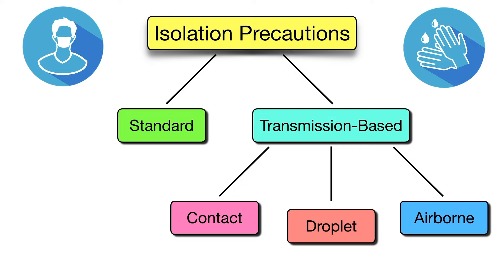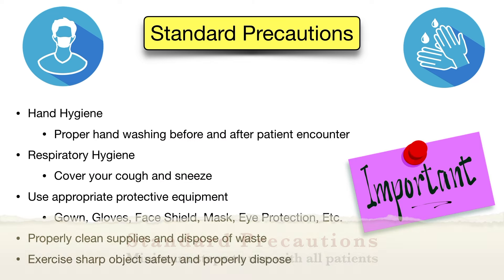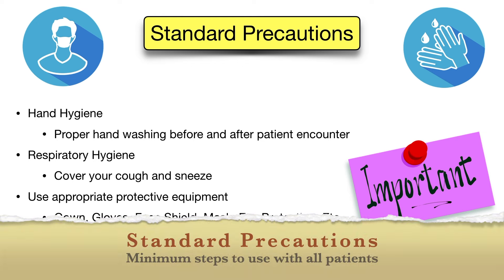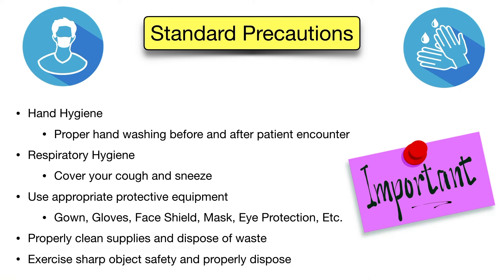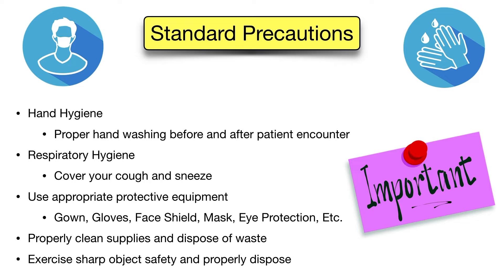All of these precautions are in addition to following standard precautions. Standard precautions are the minimum steps that should be taken with all patients to prevent infection. These include good hand and respiratory hygiene — proper hand washing before and after patient encounters, and covering your cough and sneeze. Some infections require hand washing with soap and water rather than alcohol-based hand sanitizer; these include C. diff, norovirus, and rotavirus. Standard precautions also include the use of appropriate protective equipment as deemed necessary depending on what you're doing, even if the patient is not in specific contact, droplet, or airborne precautions.